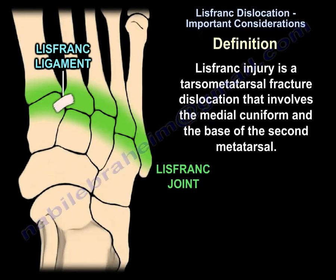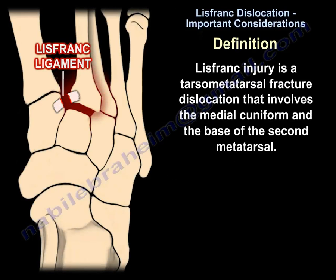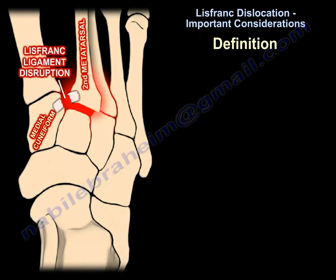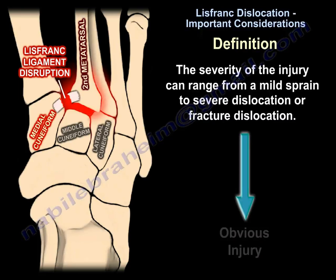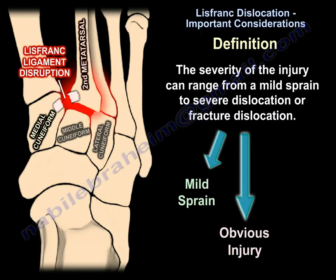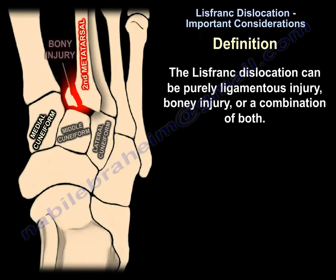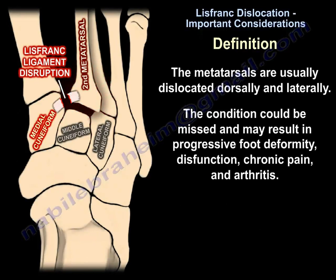A Lisfranc injury is a tarsometatarsal fracture-dislocation that involves the medial cuneiform and the base of the second metatarsal. The severity can range from a mild sprain to a severe dislocation or fracture-dislocation. It can be a purely ligamentous injury, a bony injury, or a combination of both. The metatarsals are usually dislocated dorsally and laterally. The condition can be missed and may result in progressive foot deformity, dysfunction, chronic pain, and arthritis.